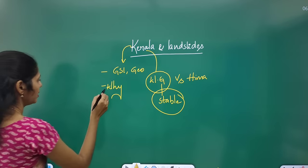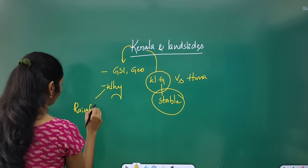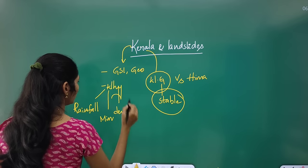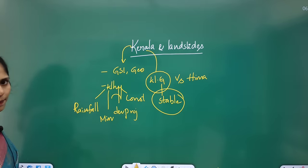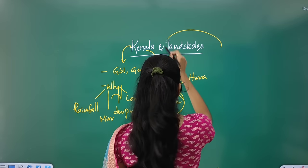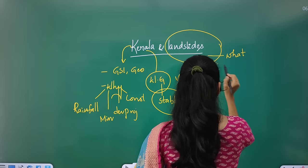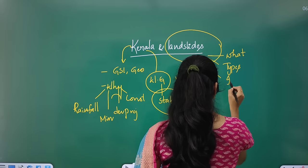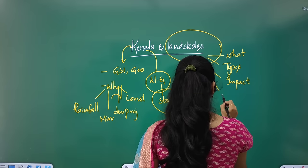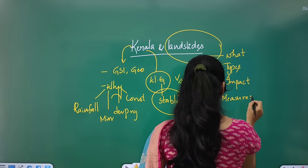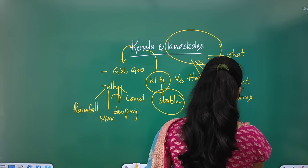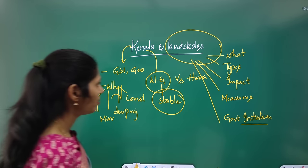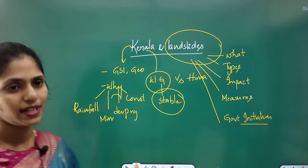You need to know: what is a landslide, the different types of landslides, what will be the impact, what measures can be taken to decrease their incidence, and what are the government initiatives. This topic is important from both GS Paper 1 Geography and GS Paper 3 Disaster Management. From a Disaster Management point of view, you need to see the guidelines to prevent landslides.